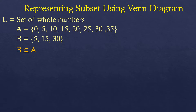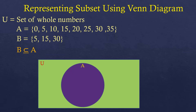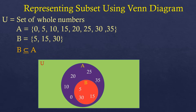How do we illustrate that using a Venn diagram? We put the universal set rectangle, then we draw set A — the bigger set — with elements 0, 5, 10, 15, 20, 25, 30, and 35. Then we draw set B inside set A, showing elements 5, 15, and 30. Since set B is drawn inside set A, this means set B is a subset of set A — it's just a portion of set A.